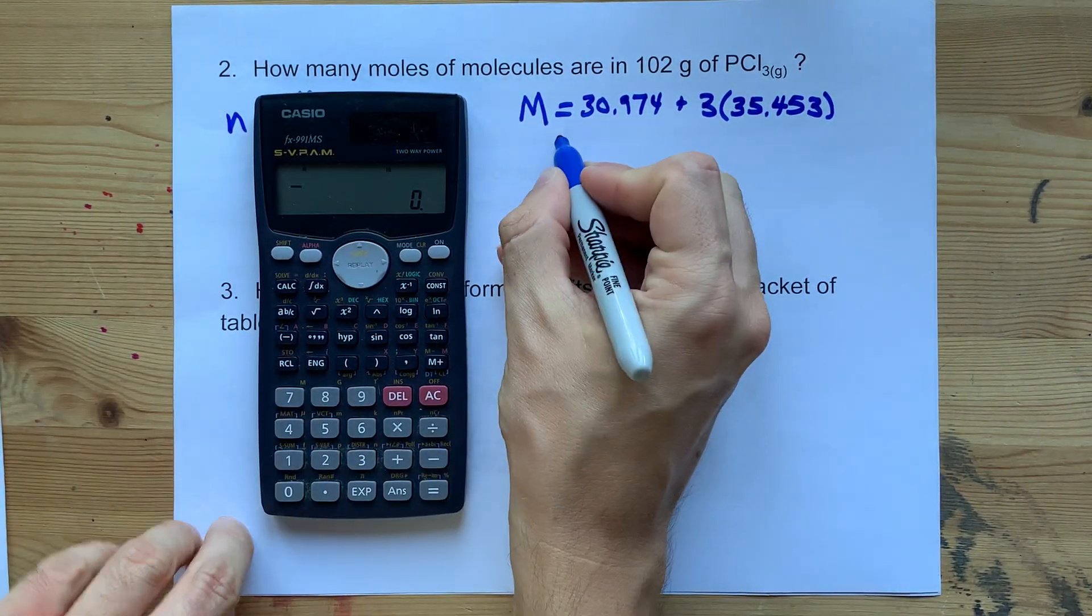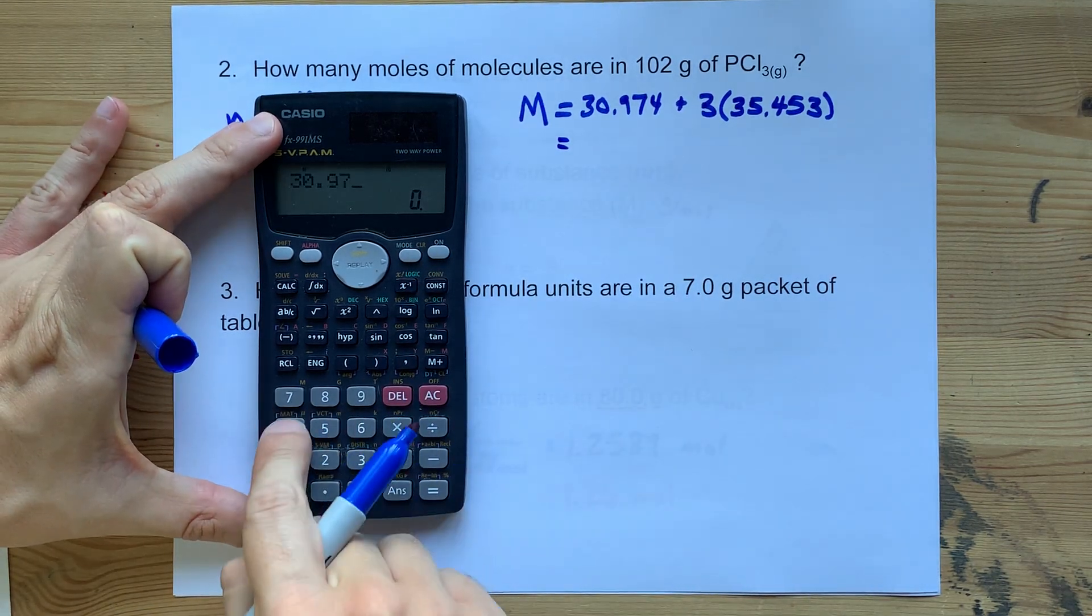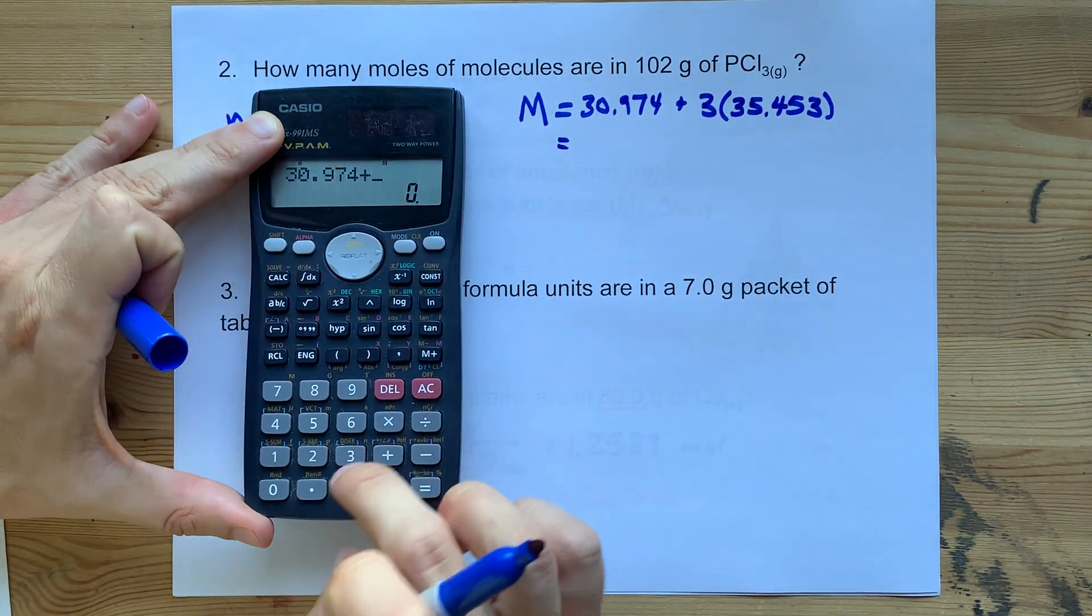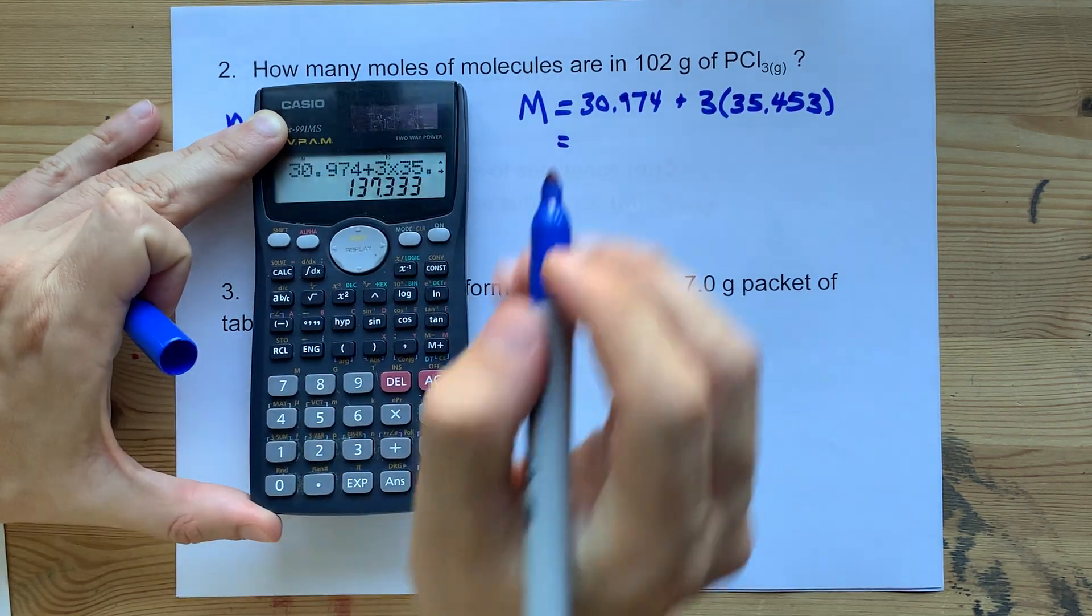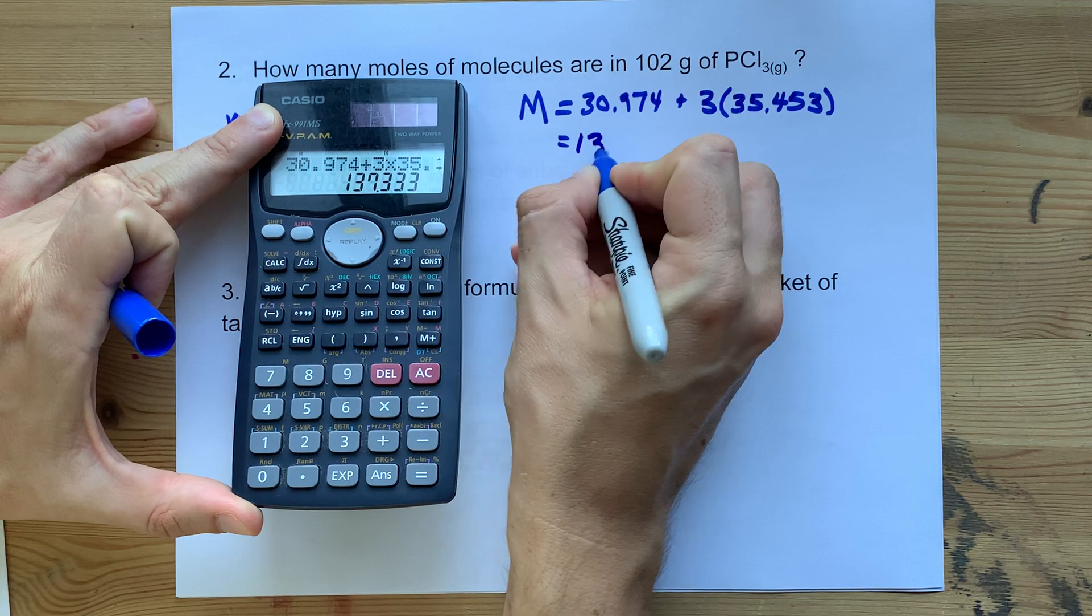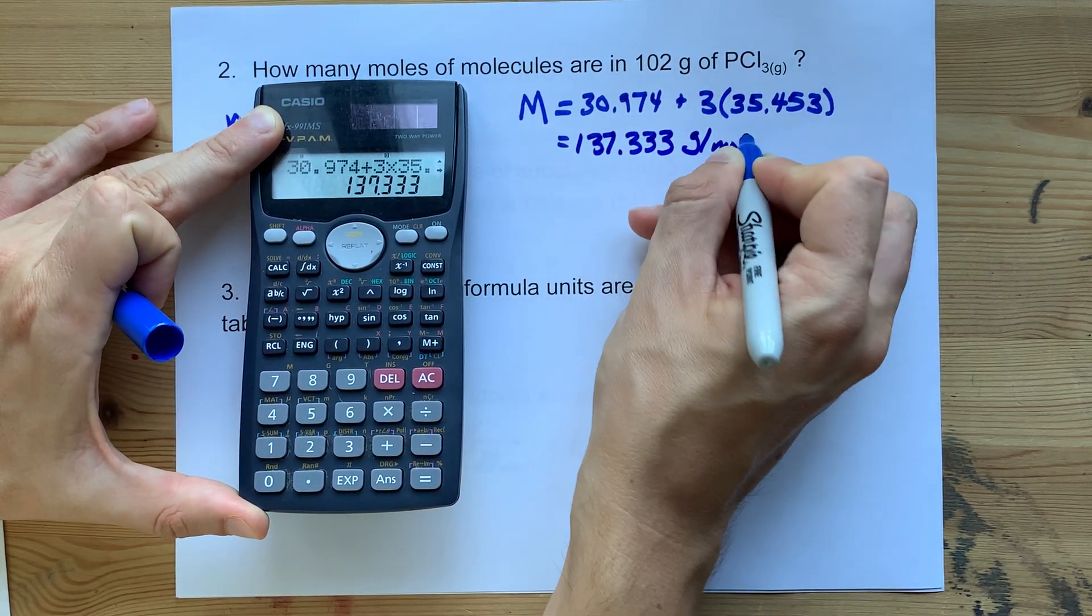The molar mass of PCl3 then gives that phosphorus 30.974 plus three times 35.453. In total, that's 137.333 grams per mole.